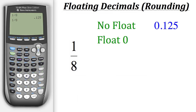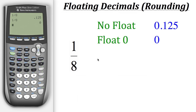This time we got a result of zero. That's because we told the calculator to give us no decimals, indicated by float zero. Since our result would normally be 0.125, the calculator rounded to zero decimal places, giving us a final result of zero.